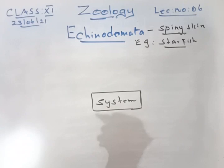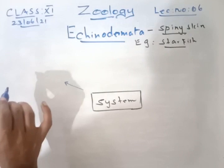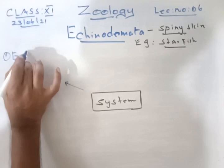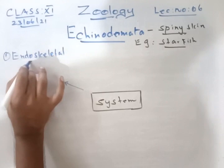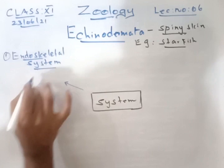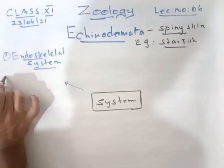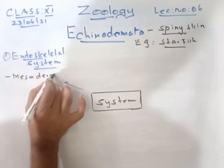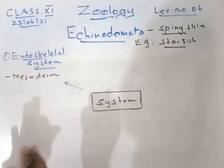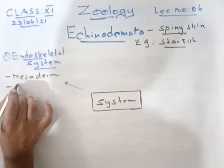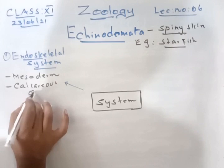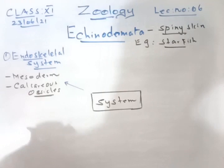First system: the endoskeletal system. The endoskeleton is formed from the mesodermal layer and is made up of calcium — calcareous ossicles (small bones called ossicles). Second system: circulatory system — they have an open type of circulation, but importantly they do not have a heart or blood vessels.